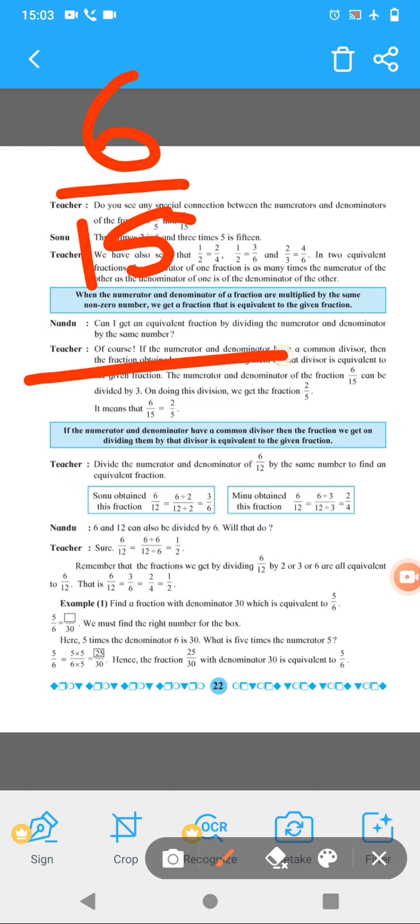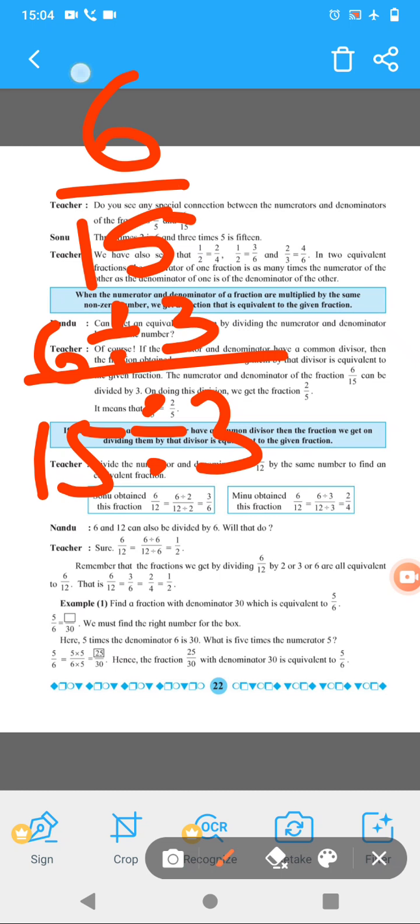Now see 6 divide by 3 and 15 divide by 3. Because in the table of 3, the 2 numbers, the both the numbers are there in the table of 3. The 6 is also there and 15 is also there.